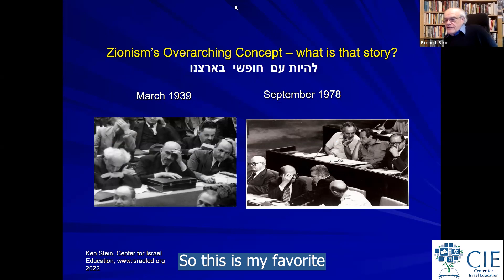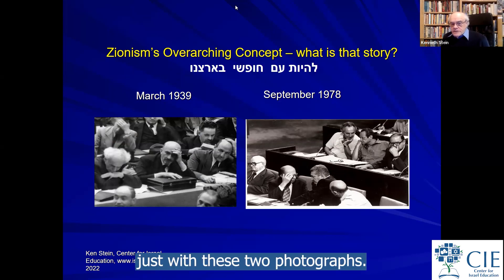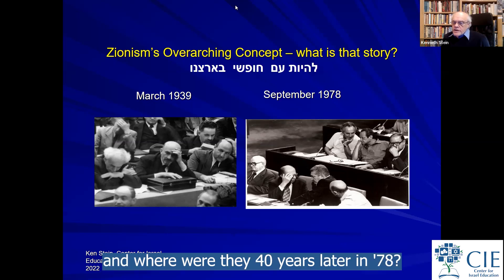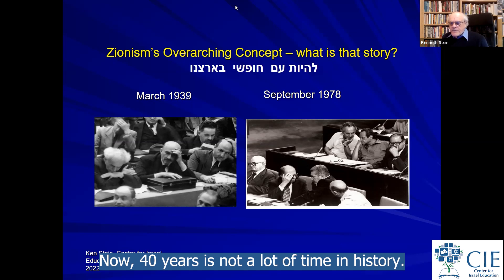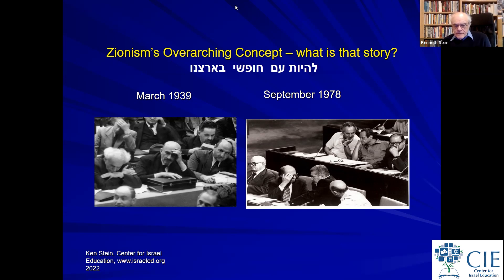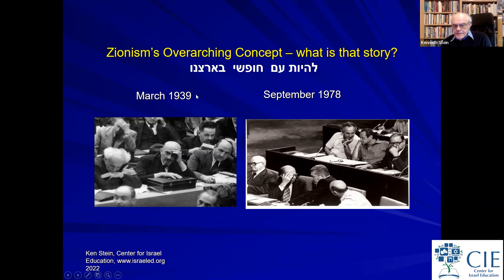This is my favorite series of photos because they are 40 years apart — and you could start a class of 7th graders or 12th graders just with these two photographs. They essentially show where Jews were in 1939 and where they were 40 years later in 1978. The first is the Zionist Congress of 1939: Ben-Gurion on the left, Weizmann in the center, Eliezer Kaplan on the right.